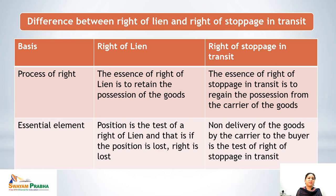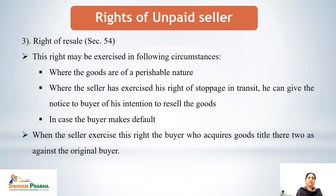The essential element in case of the right of lien is that possession is the test — if possession is lost, the right is lost. In the case of stoppage in transit, the test is non-delivery of goods by the carrier to the buyer: if the carrier has not transferred the goods to the buyer, this right can be exercised.